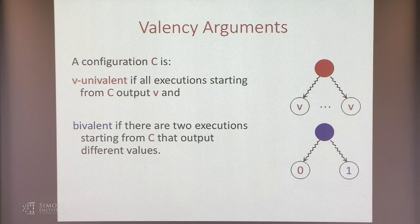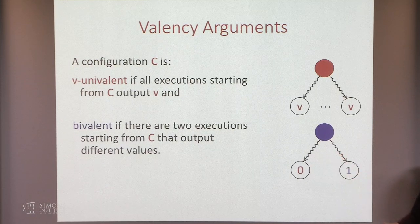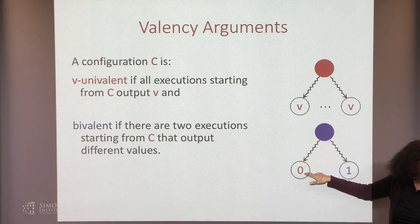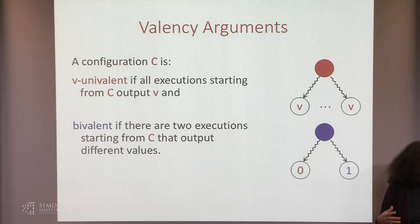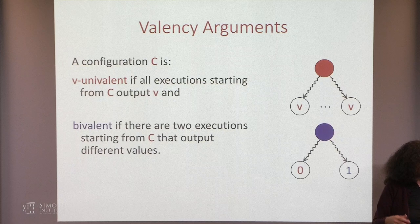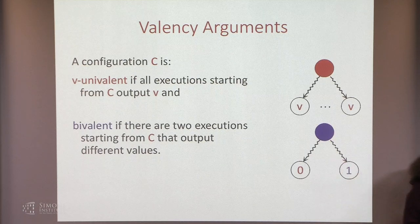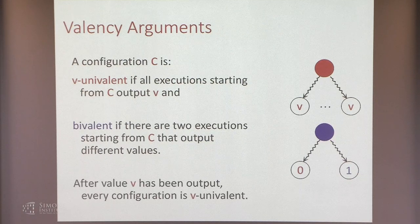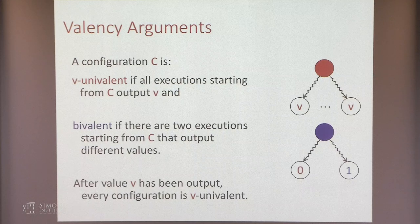After some value V has been output, every configuration is V-univalent — every other process that's going to output something has to output V. The result we want to prove is that there's no deterministic algorithm to solve consensus among two or more processes in an asynchronous system. This theorem was first proved by Fischer, Lynch, and Paterson in the early 80s, and is often referred to as FLP.